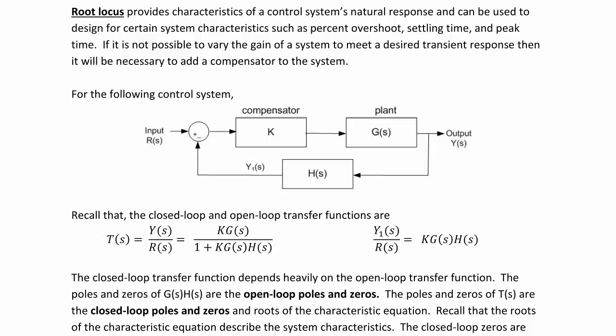Recall that the closed-loop transfer function is T(s) = y(s)/r(s) = KG(s)/(1 + KG(s)H(s)), and the open-loop transfer function is y(s)/R(s) = KG(s)H(s).